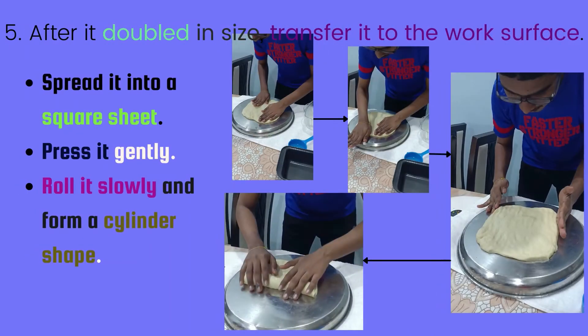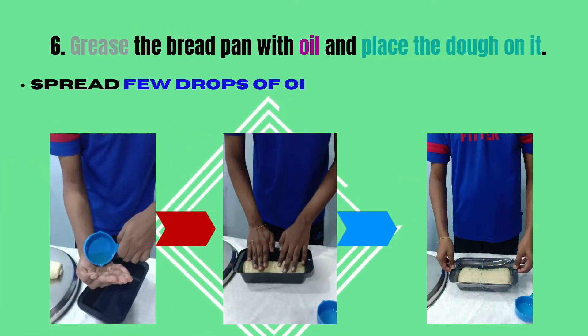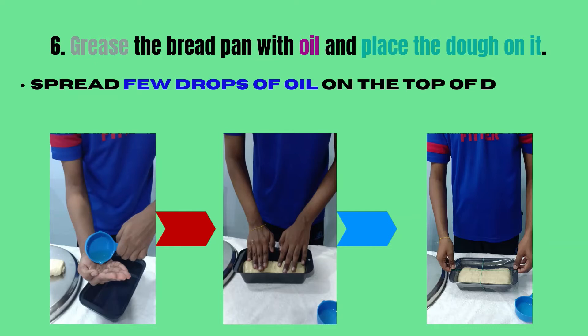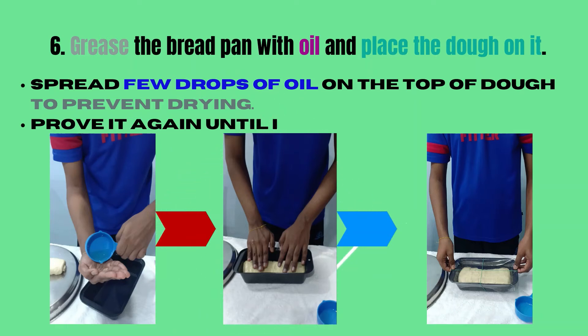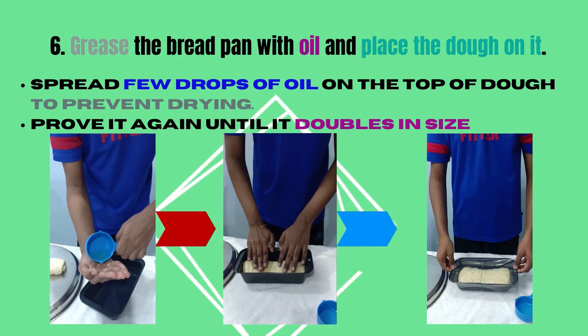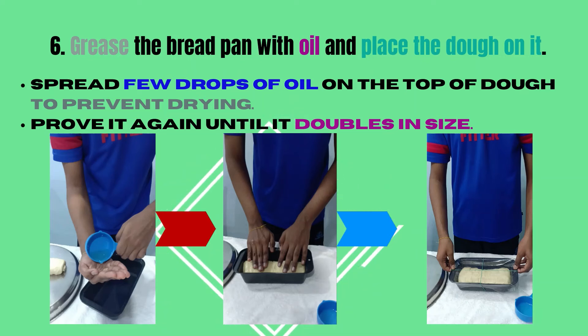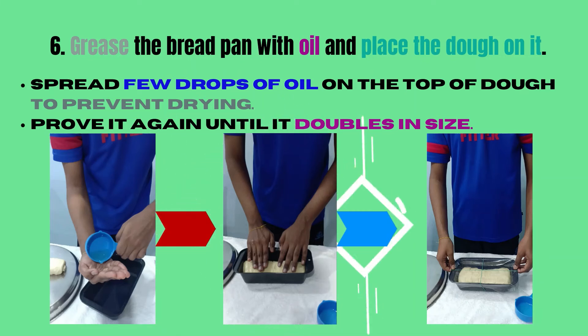After waiting for 2 hours, transfer the dough to the work surface. Listen carefully: you have to spread the dough into a square sheet and press the dough very gently. Roll it slowly and form a cylinder shape as shown in the image. Then grease the bread pan with oil, place the dough on it, and spread a few drops of oil on top to prevent drying. You can proof it again until it doubles in size, which may take about half an hour.